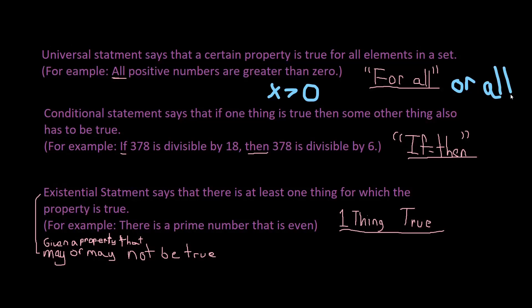A conditional statement says that if one thing is true then some other thing also has to be true. For example, if 378 is divisible by 18, then 378 is divisible by 6.